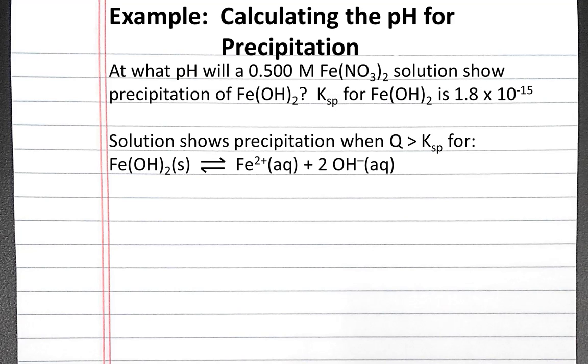We know the solution will show precipitation when Q is greater than Ksp for iron 2 hydroxide. We know that the iron 2 plus concentration is 0.5 molar because there's a 1 to 1 relationship between iron 2 plus concentration and the iron 2 nitrate concentration.